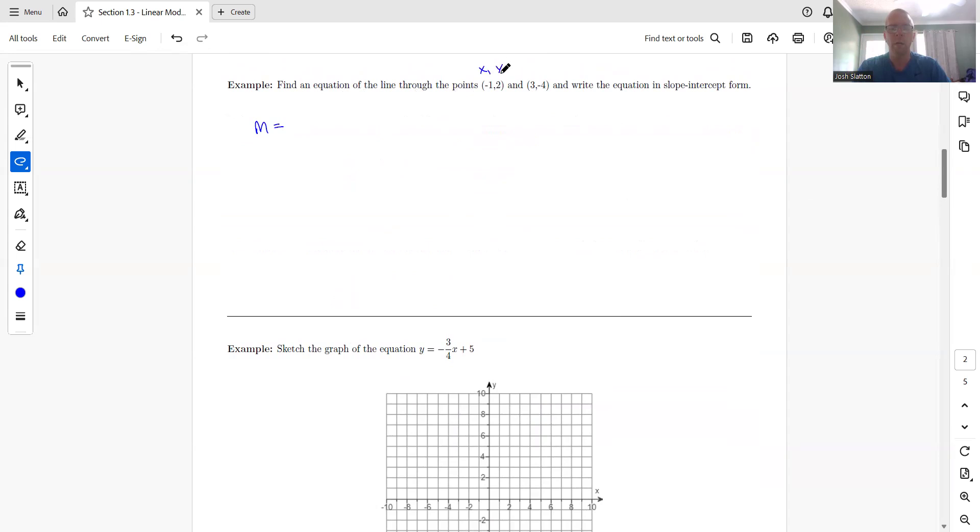Write the equation in slope-intercept form. So let's start by finding the slope. So x1, y1, x2, y2. And, again, you could switch these. It doesn't matter which is first, which is second. So y2 minus y1 over x2 minus x1. So we get the slope as negative 6 over 4 or negative 3 halves.